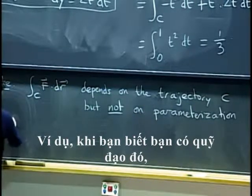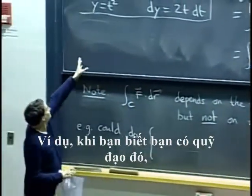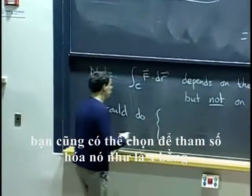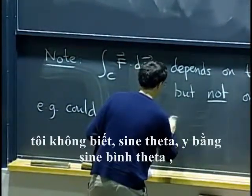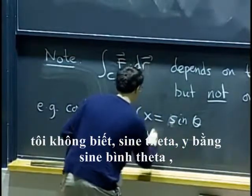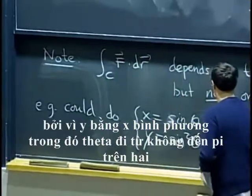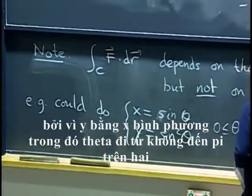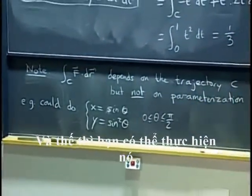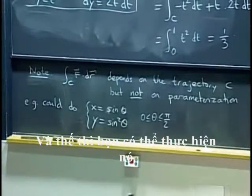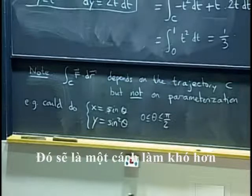what you could do is, when you know that you have that trajectory, you could also choose to parametrize it as x equals sine theta and y equals sine squared theta, because y is x squared, where theta goes from zero to pi over two. And then you could get dx and dy in terms of d theta. And you would be able to do it with a lot of trig, and you would get the same answer.